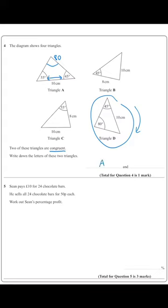So triangle A and D are the same because we'll have that 45 in the bottom right, the 10 as the base and 80 at the top.